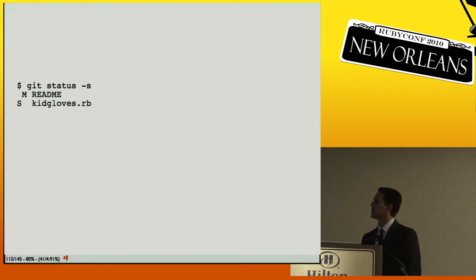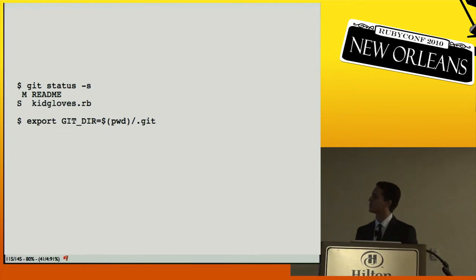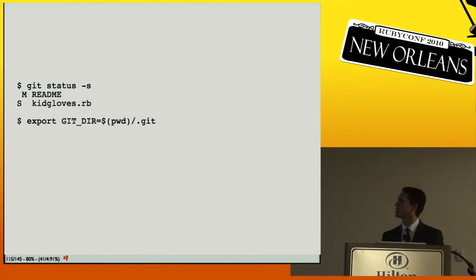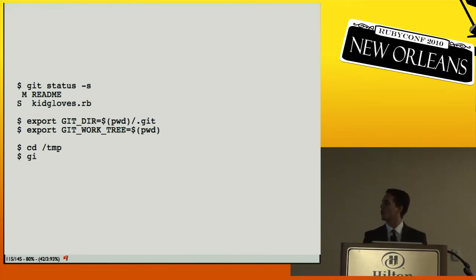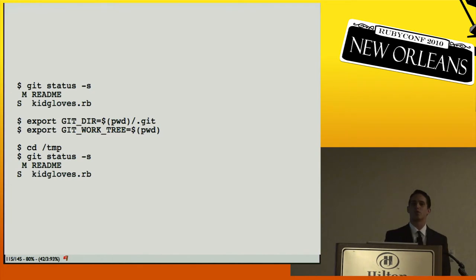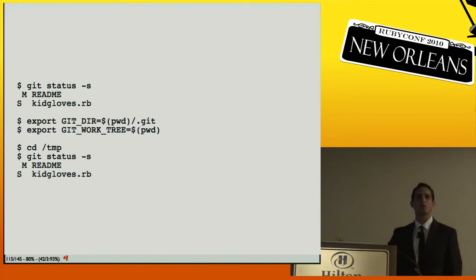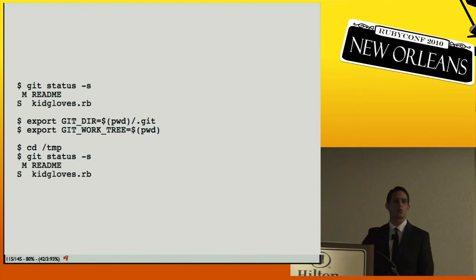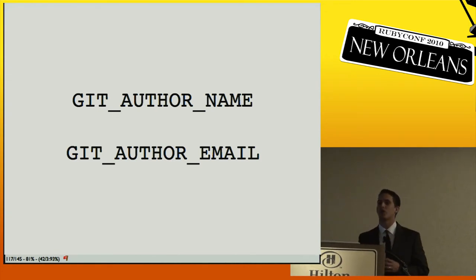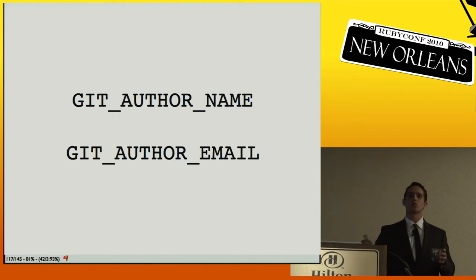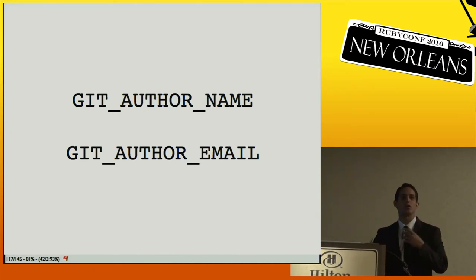You can also override commit credentials with environment variables for author name and email. Every time you do a commit, Git uses whatever those environment variables are set to. This is very helpful for pair programming, where you need to change the attribution on the fly.